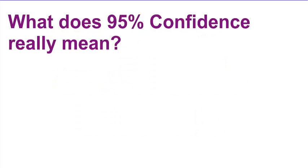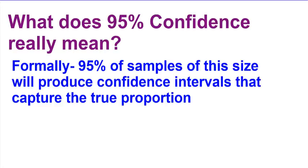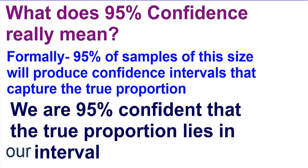So what do we mean when we say that we have 95% confidence that our interval contains the true proportion? Formally, what we mean is that 95% of samples of this size will produce confidence intervals that capture the true proportion. This is correct, but it's a little long-winded. So sometimes we just say that we are 95% confident that the true proportion lies in our interval. Our uncertainty is about whether the particular sample we have at hand is one of the successful ones or one of the 5% that failed to produce the interval that captures that true value.